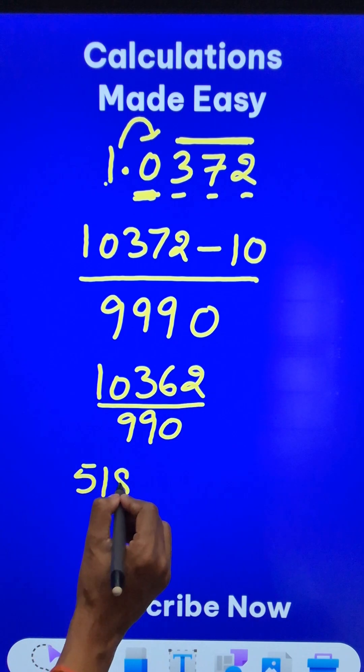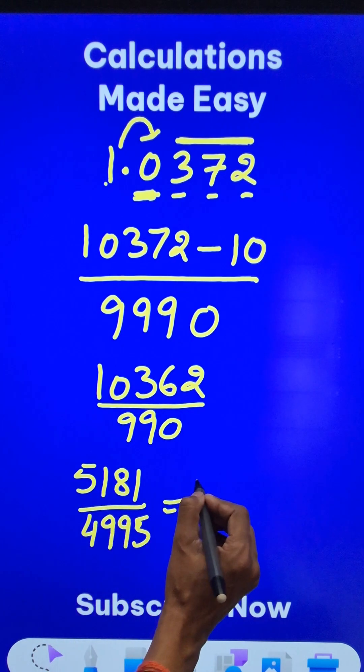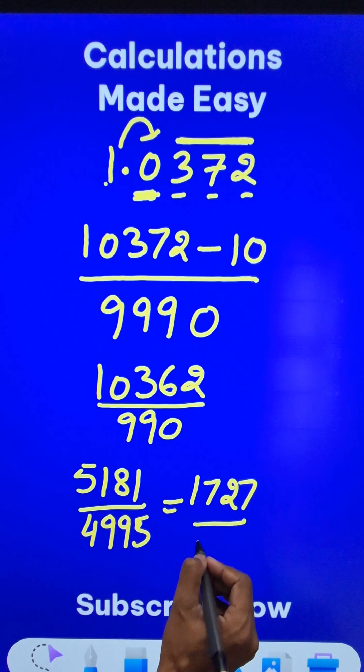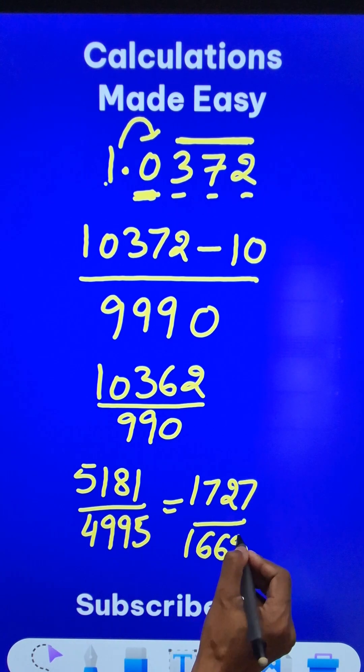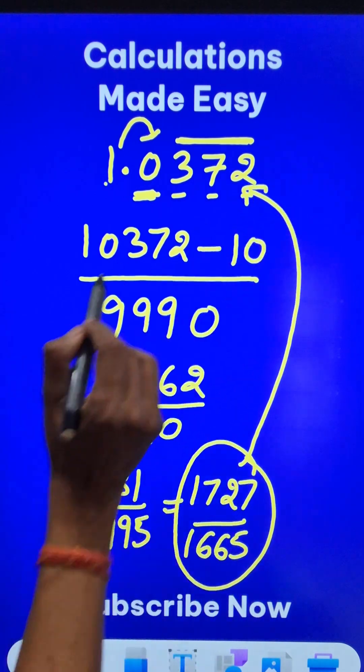5181 divided by 4995. Another time I think there is a common factor 3 now. So 1727 and 4995 divided by 3 gives 1665. Now you can divide these two numbers and check if they give you the same decimal or not.